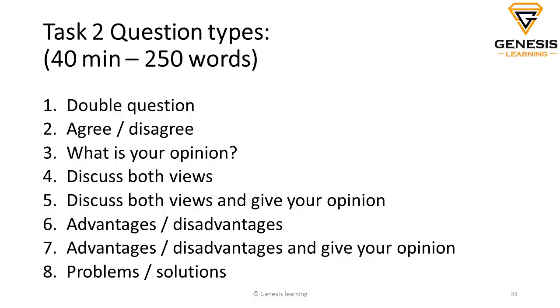Task two is going to be the same whether it's academic or general. You've got eight different question types: double question; agree or disagree; what is your opinion; discuss both views; discuss both views and give your opinion; advantages and disadvantages; advantages, disadvantages, and give your opinion; and problems and solutions. For this task, you will get around 40 minutes and you have to write at least 250 words.